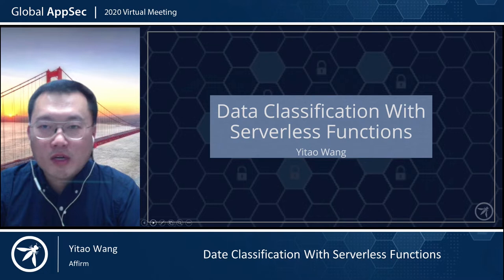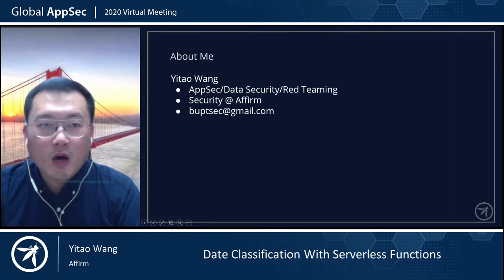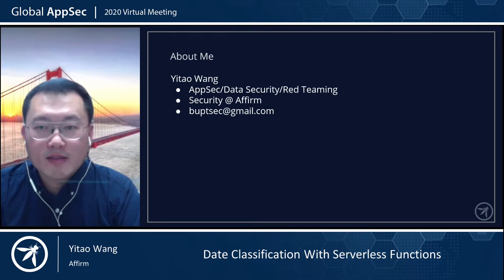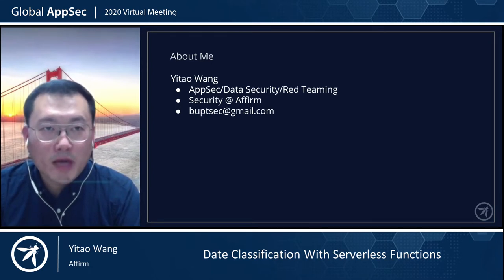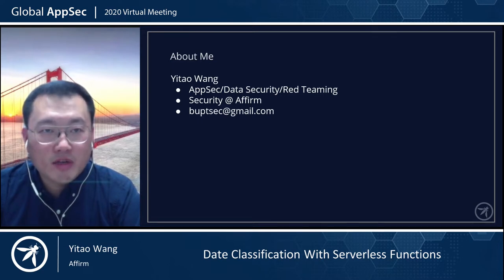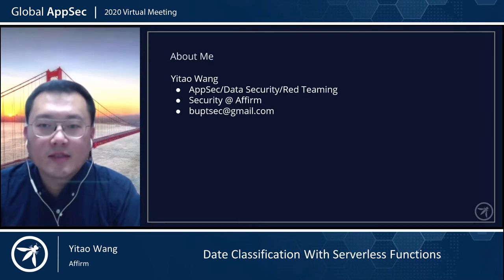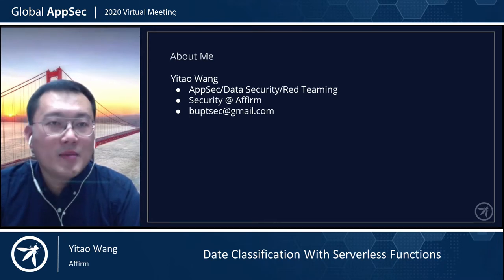First, a quick introduction of myself. My name is Itao Wang, and I work for a fintech startup based in San Francisco. I have about 12 years of experience working on information security. My recent two jobs are all in fintech, focusing heavily on AppSec, red teaming, and data security.